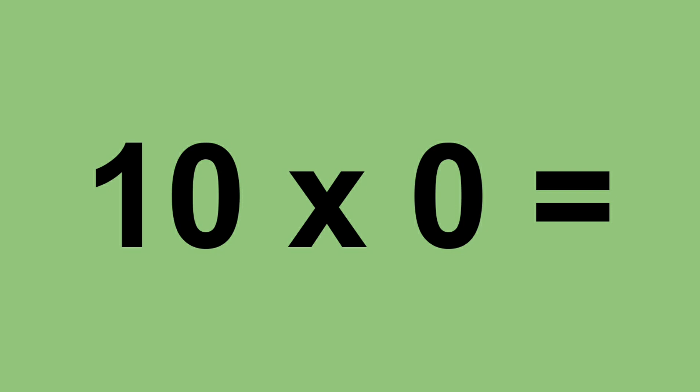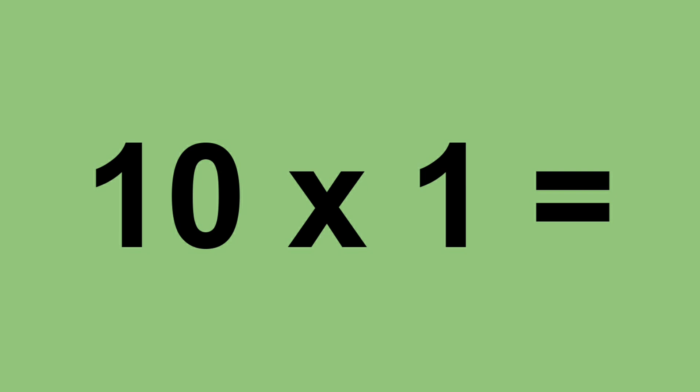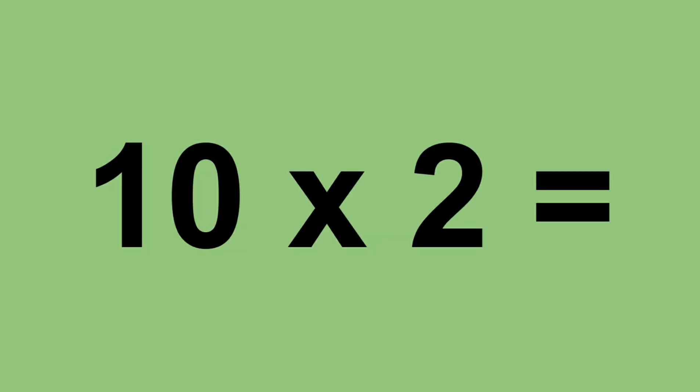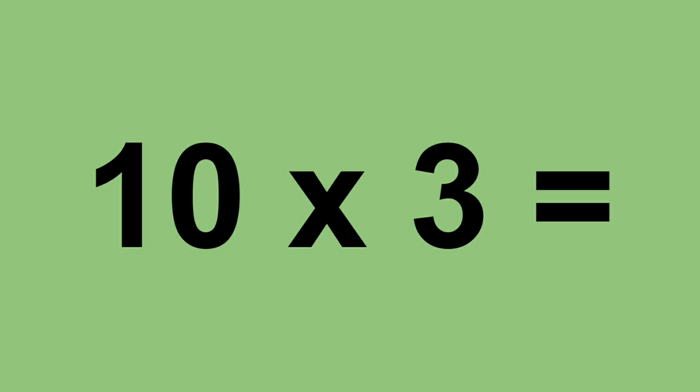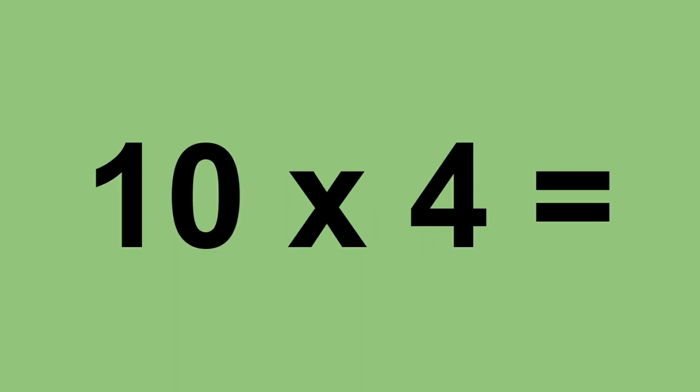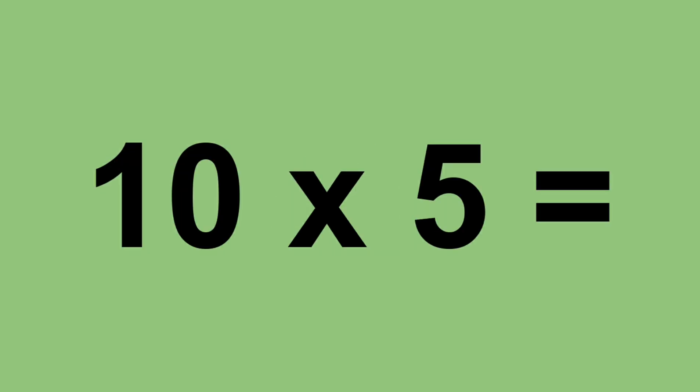Ten times zero equals zero. Ten times one equals ten. Ten times two equals twenty. Ten times three equals thirty. Ten times four equals forty. Ten times five equals fifty.